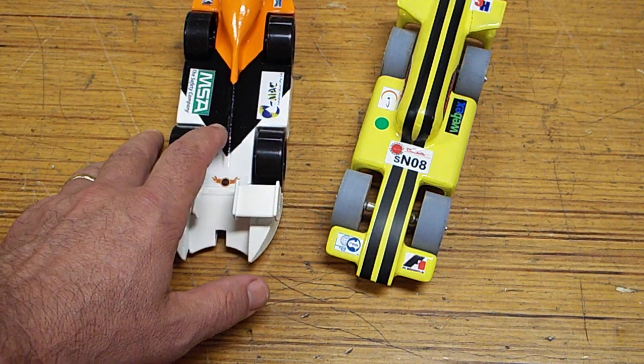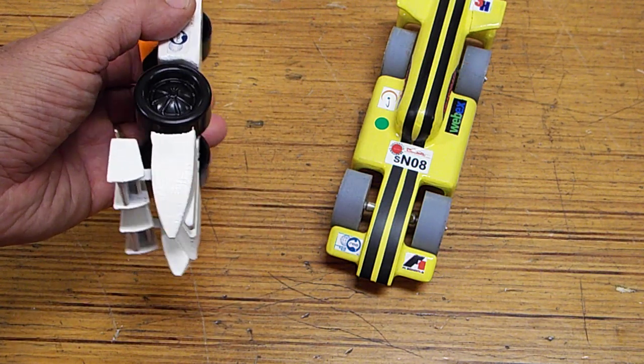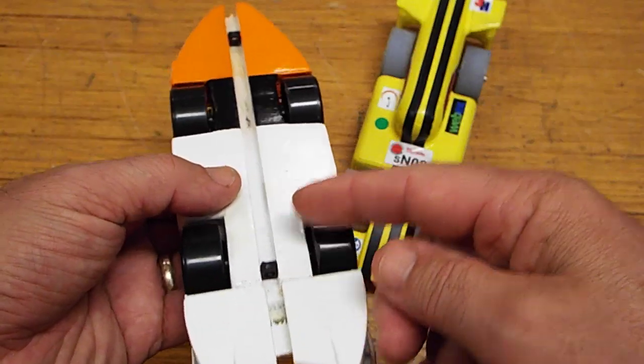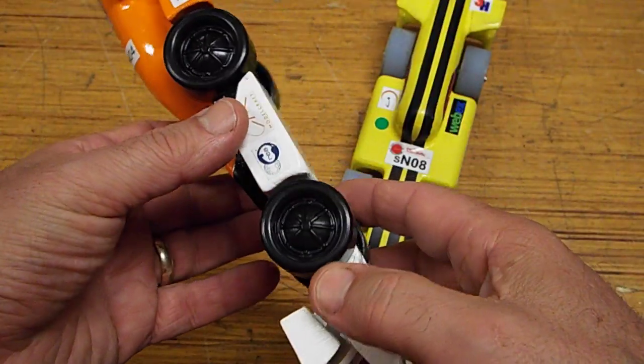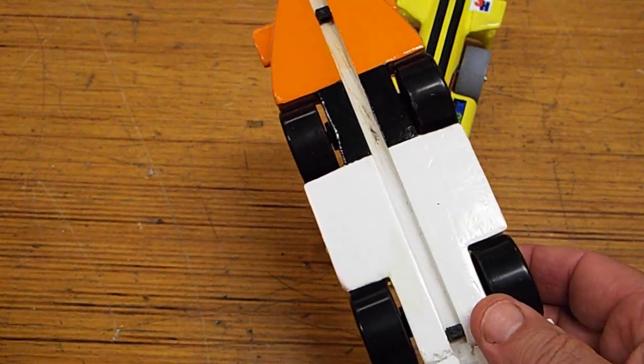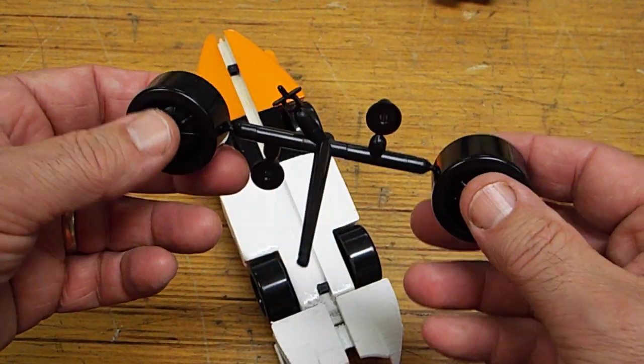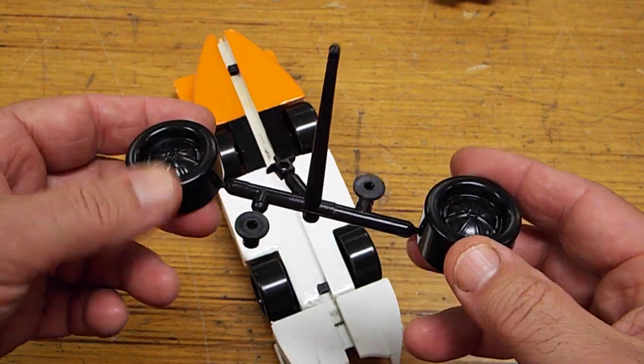This car on my left here, or your left, is a development class car, which means that it has to use a standard wheel supplied by the REA, the organisation that runs the F1 in Schools, and they're those plastic wheels that you can see there. Now they come on a little assembly like this, and you can see here that they're plastic moulded.